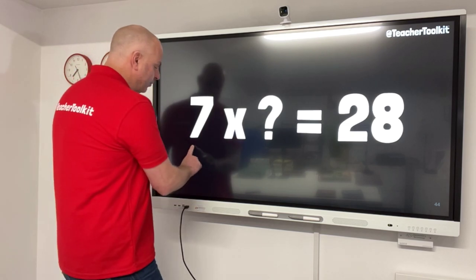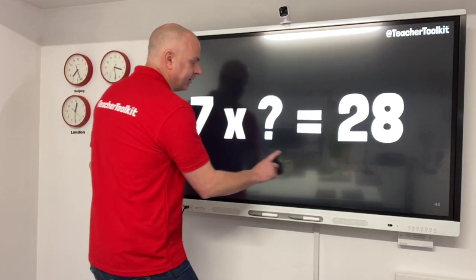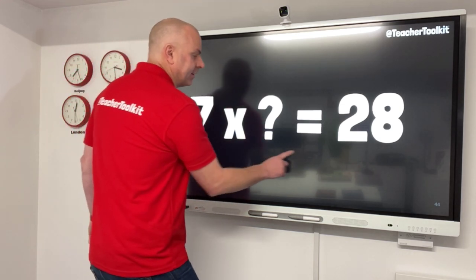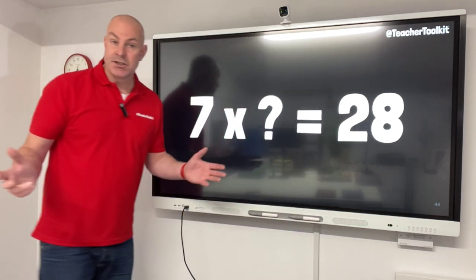Here it is again. Version 1, 7 times something equals 28. Version 2, 7 times something equals 28. Can you spot the difference?